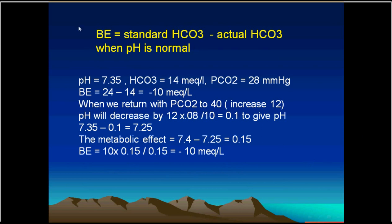Another formula: base excess equals the standard bicarbonate (24 mEq/L) minus the actual bicarbonate when the pH is normal. For example, if a patient has a pH of 7.35, bicarbonate of 14, and partial pressure of carbon dioxide of 28, then according to this formula, the base excess would be 24 minus 14, which equals 10.